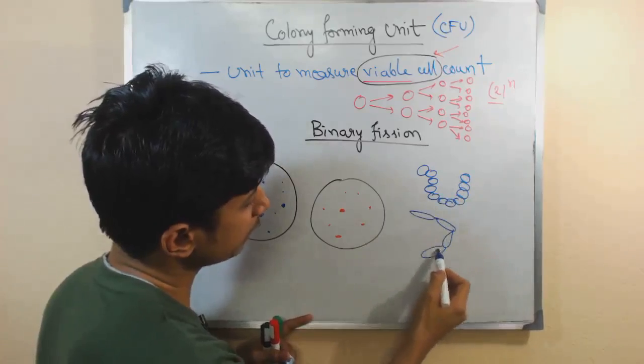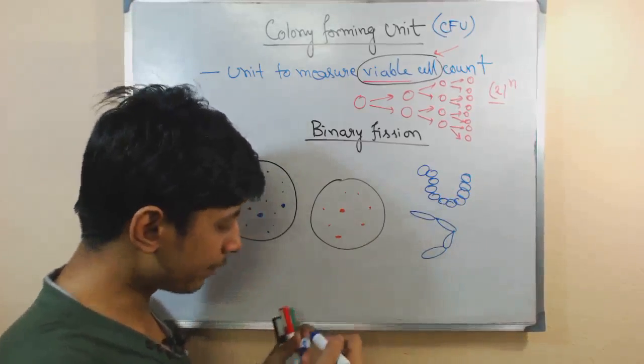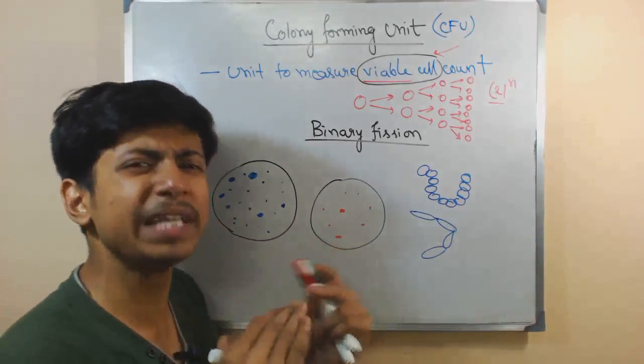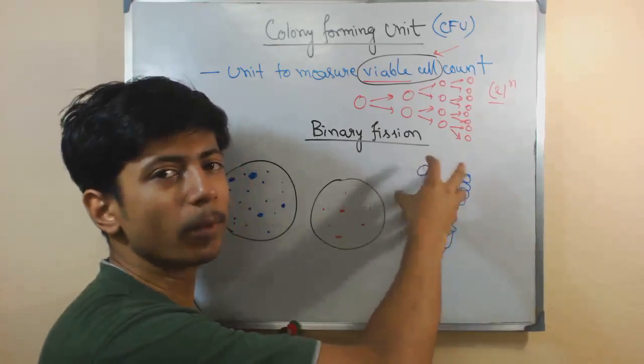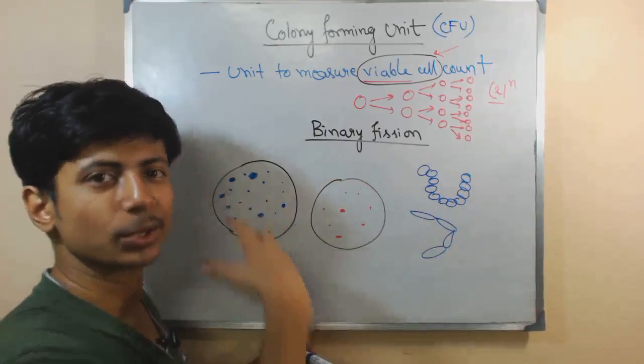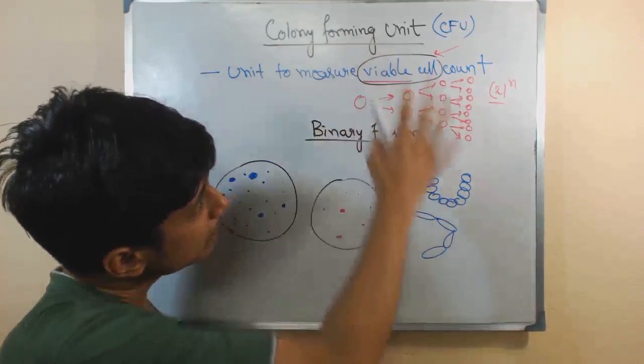So they have a tendency to remain firmly attached with themselves, so we can see the population at once as a colony. That is Colony Forming Unit.